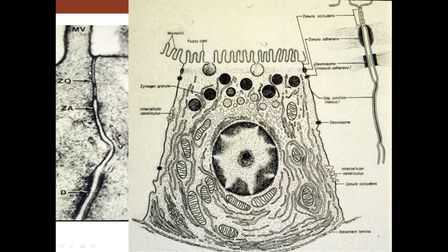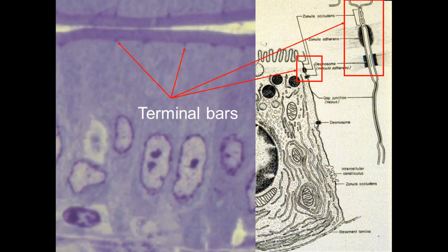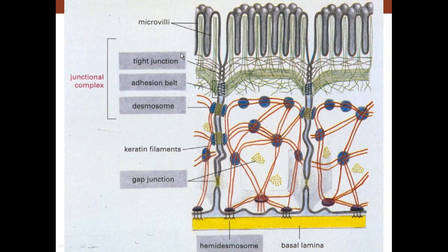To summarize the junctions: zonula occludens prevents things from passing through; zonula adherens and the desmosomal connections hold cells together forming terminal bars visible at the light microscopic level. So this is one cell, another cell, another cell, all attached with these junctions at the surface. The terminal bars are what we call the combination of tight junctions, adherent junctions, and desmosomes seen under the light microscope.